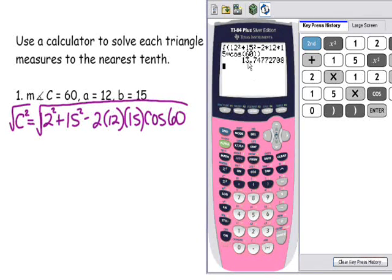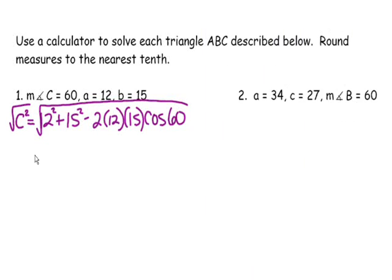And you find out that C is 13.7. If you don't feel comfortable typing this whole thing into the calculator, you can go ahead and you can solve each individual piece and then type it in. That's fine. But when the thing that I'm looking for is the side, it is totally okay to type the entire thing into the calculator. So 13.7.